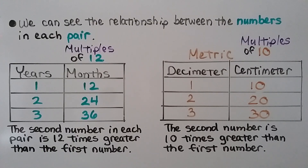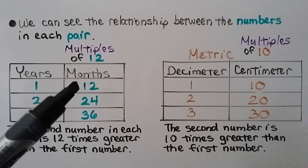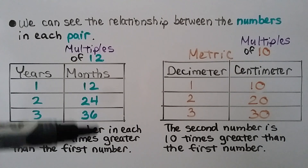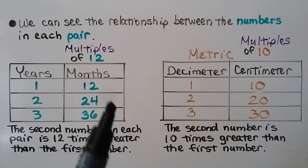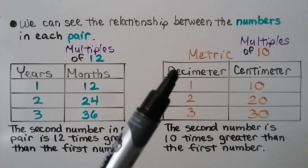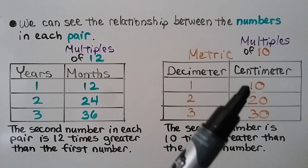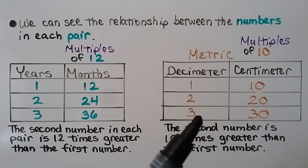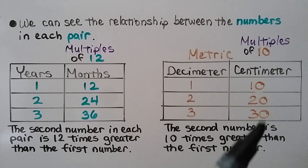We can see the relationship between the numbers in each pair. For years and months, 1 year equals 12 months, so 2 years is 24 months and 3 years is 36 months — these are multiples of 12. The second number in each pair is 12 times greater than the first. For the metric system with decimeters and centimeters, 1 decimeter is 10 centimeters, so 2 is 20 and 3 is 30 — multiples of 10; the second number is 10 times greater.